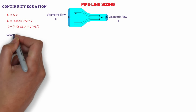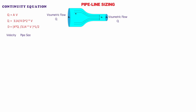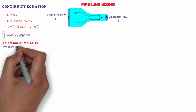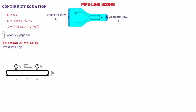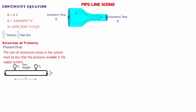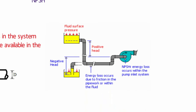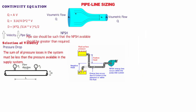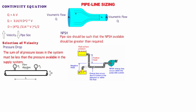From the continuity equation, we can easily conclude that higher the velocity, smaller is the pipe size and hence lower is the pipe cost. But selection of a suitable velocity value depends on various factors like pressure drop — the sum of all pressure losses in the system must be less than the pressure available in the supply system — and NPSH: the pipe size should be such that the NPSH available is greater than the required. For more details on NPSH, you can refer to our previous video on centrifugal pump piping part 1.